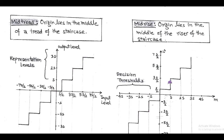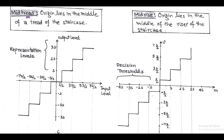According to this, uniform quantizer is classified into mid-tread and mid-rise, as shown in figure. Here, the staircase function is represented on output level versus input level. In mid-tread, origin lies in the middle of a tread on the staircase. In this, each tread or step size are equal. So at the origin, the tread has input level from -S/2 to +S/2.